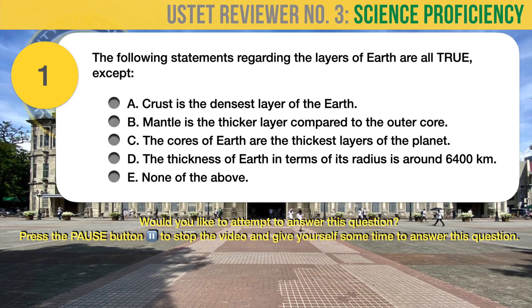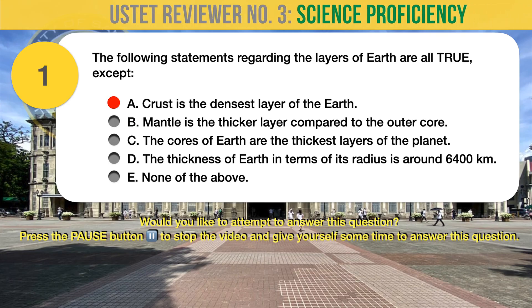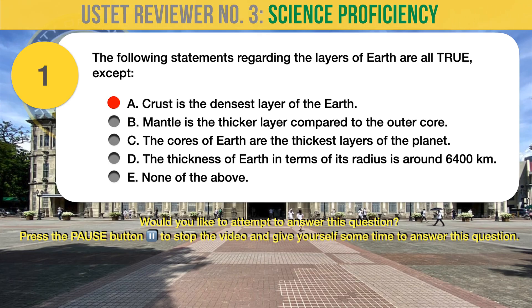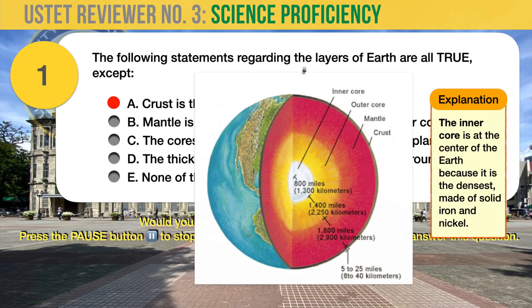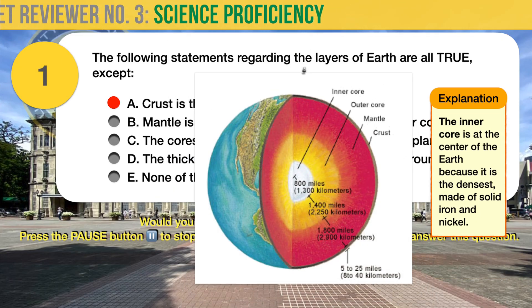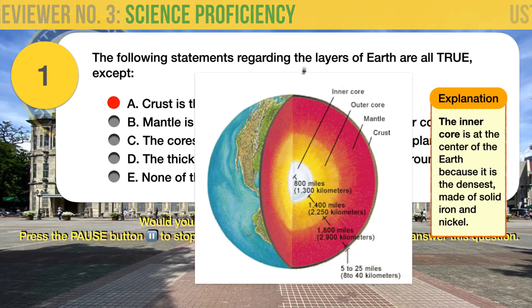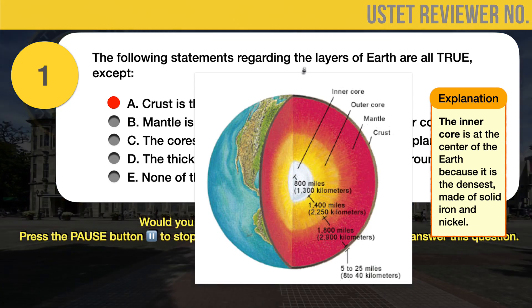The correct answer is A. That the crust is the densest layer of the earth is not true. In fact, crust is the least, not most, dense layer among the layers of the earth. The inner core is the densest due to its metallic composition.